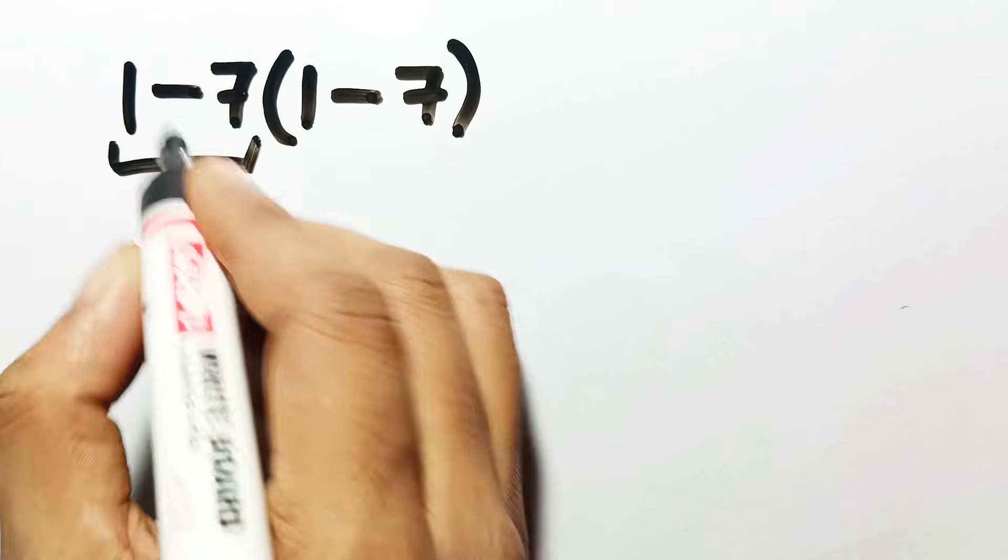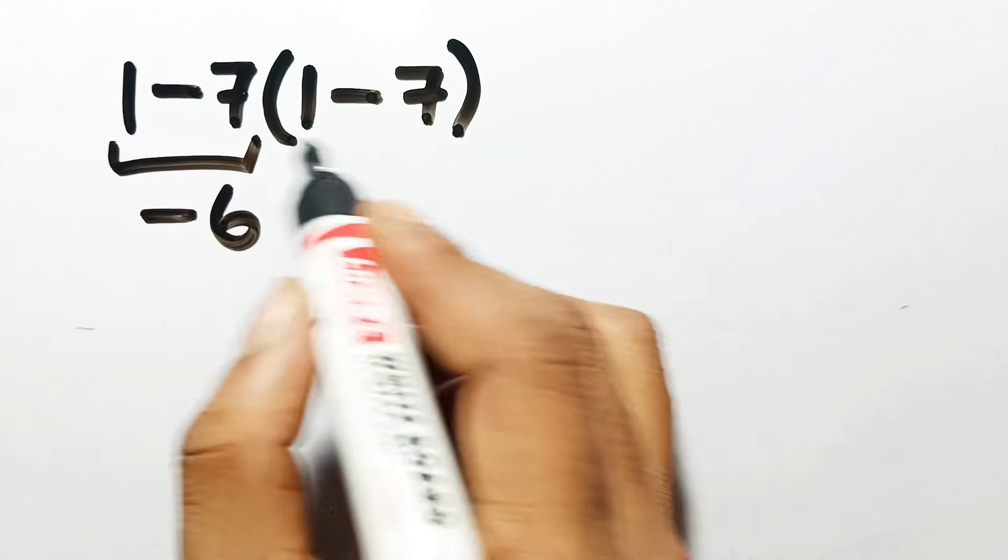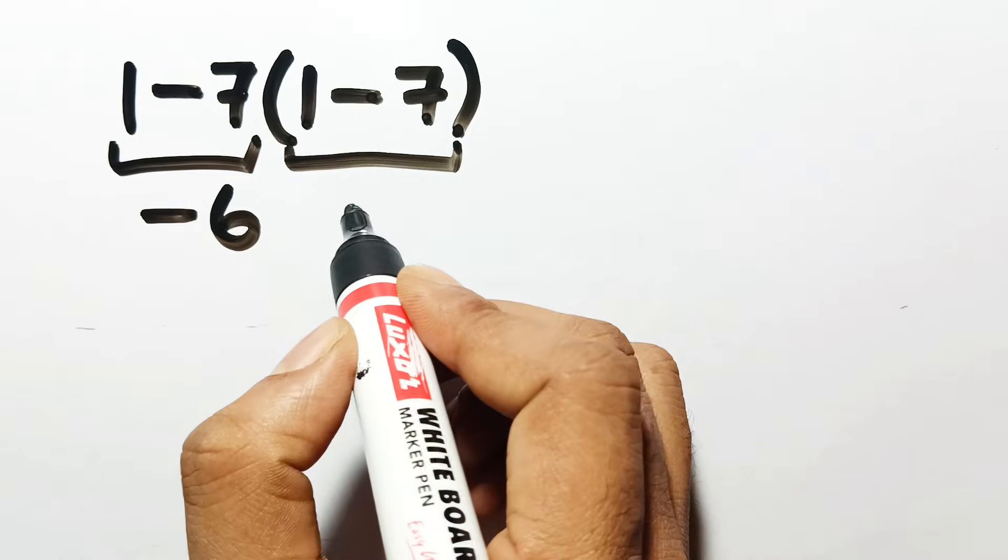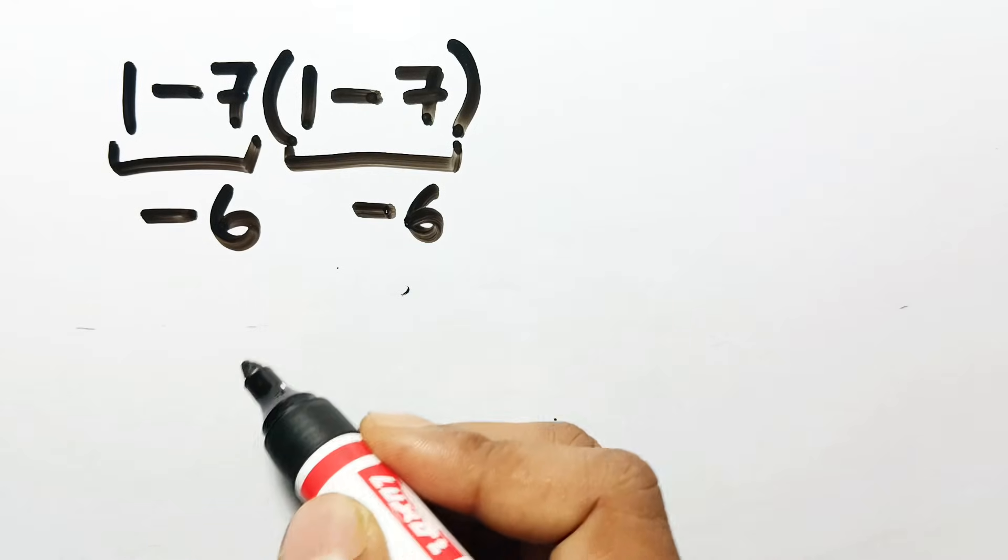1 minus 7 gives us negative 6. And inside the parentheses, again, here we have 1 minus 7, which also gives us negative 6.